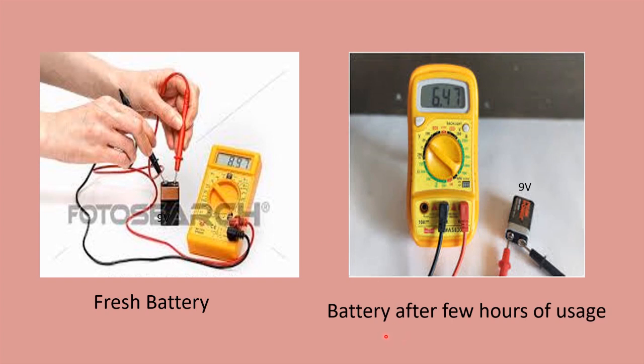Here after few hours of usage the cell shows the potential difference to be 6.47. The same 9 volt battery shows a voltage of 6.47.